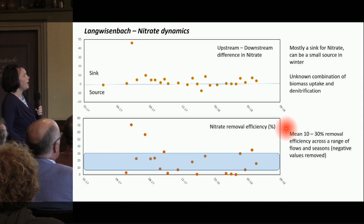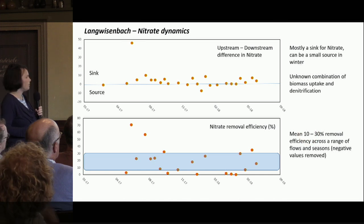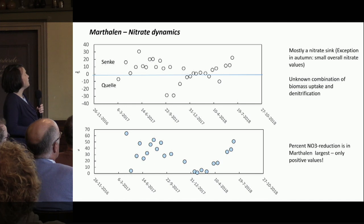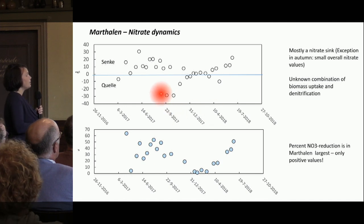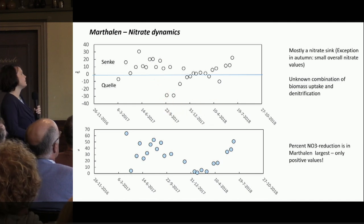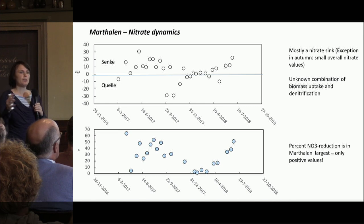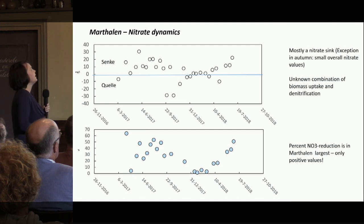Numbers vary: for example we have 10 to 30 percent removal efficiencies in some systems. In Maatan, which is now a beaver meadow — a wider system — the trend is the most obvious. The beaver meadow seems to be more efficient in removing nitrate from the water than the beaver cascades.